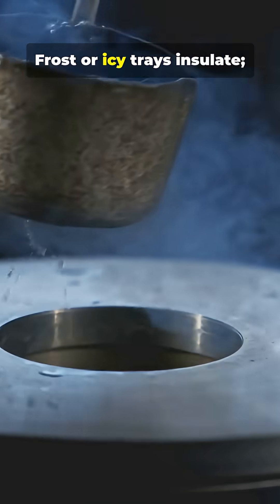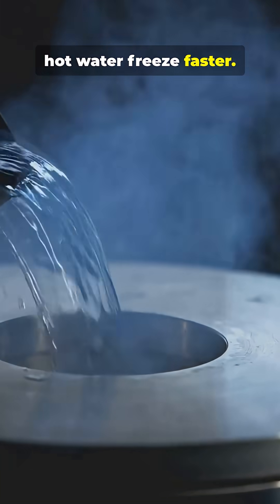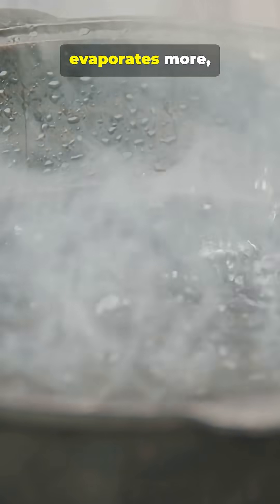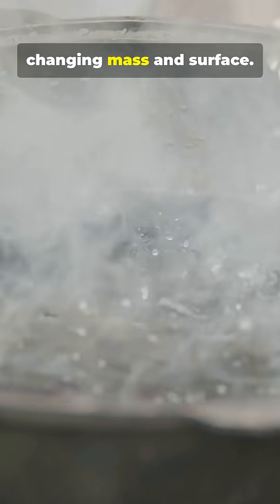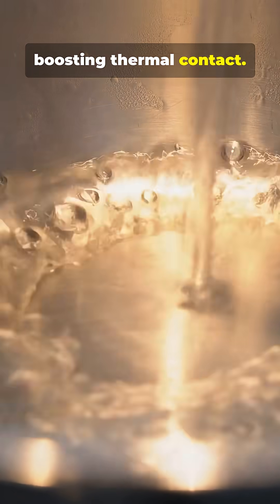Frost or icy trays insulate. Clean metal contact can make hot water freeze faster. Uncovered hot water evaporates more, changing mass and surface. Hot cups can melt a thin frost layer, boosting thermal contact.